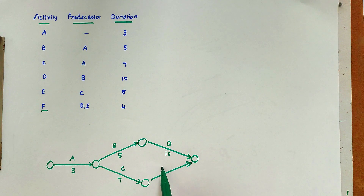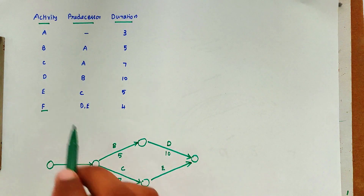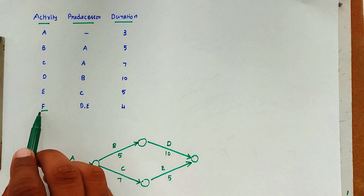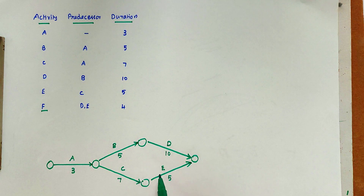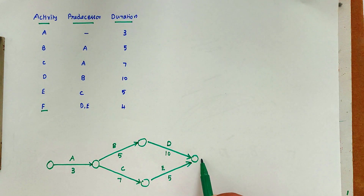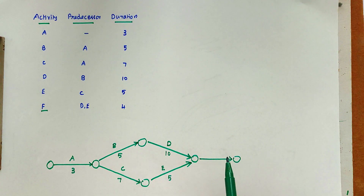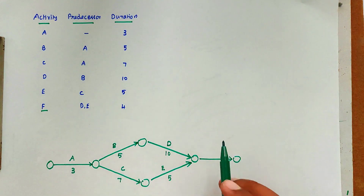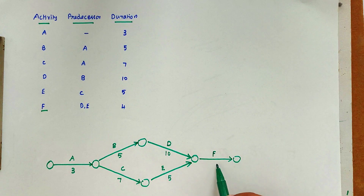We draw activity E like this. The duration of E is 5. Then we draw activity F, whose preceding activities are D and E. In order to minimize dummy activities we draw it like this — the main rule in CPM is to reduce dummy activities in order to reduce the network paths. Activity F has duration 4.